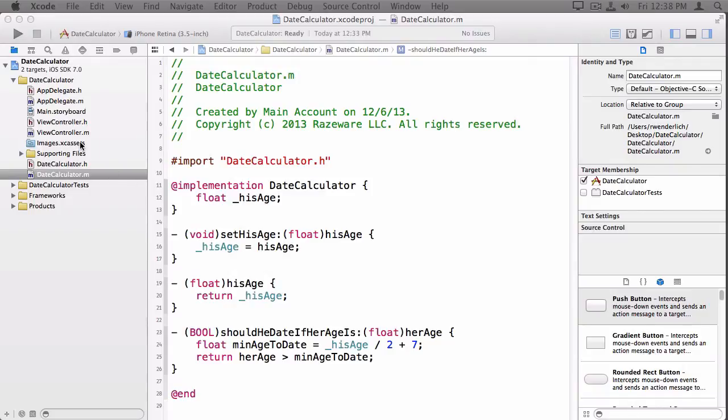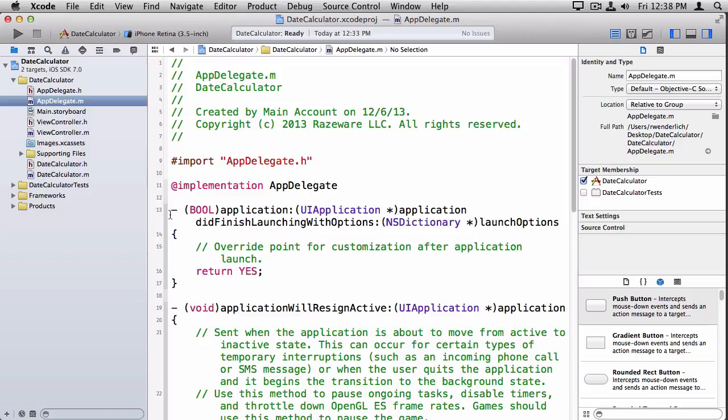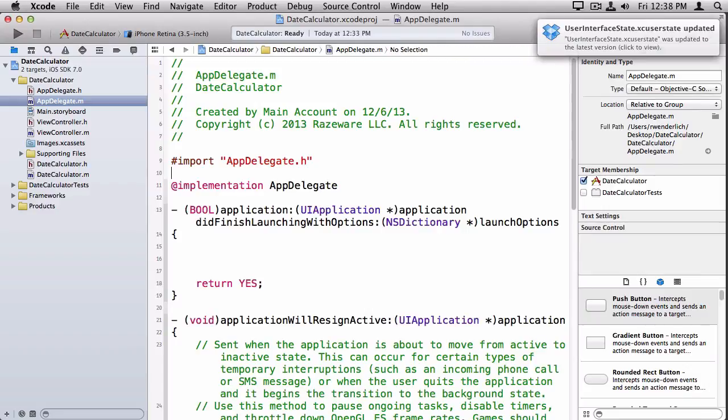So, that's actually it for the class. Now, all we need to do is test it out. So, switch to appdelegate.m. There's this method here, application didFinishLaunchingWithOptions. That's the thing that gets called when the app first starts up. So, it's a good place to try this out. So, the first thing we need to do is import our new class, datecalculator.h. And now, this class knows about the other class.